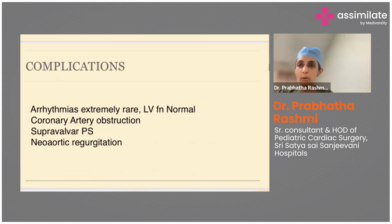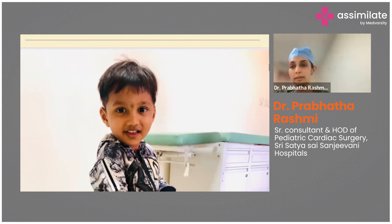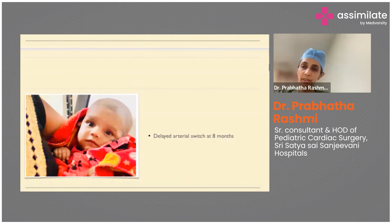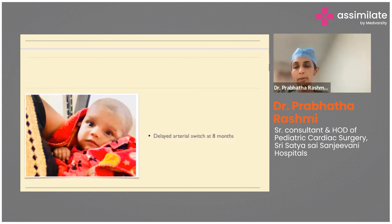With permission, two case examples are shared. The first baby came at day six of life for an arterial switch with intact ventricular septum and a small ASD, and is seen here as a healthy three-year-old at follow-up. The second child came at eight months of life; despite the late presentation, his LV was not too regressed and a direct arterial switch was performed successfully. At one-month follow-up, his LV function was normal, confirming the LV had trained to pump against aortic pressure.